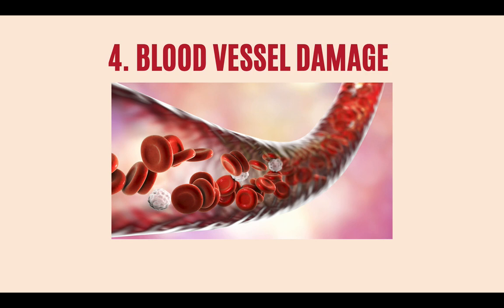Because this is happening all around the body, coagulation factors are being used up and the body's stores become completely depleted. Coagulation can't keep up with the breakage of blood vessels; small blood clots are continuously trying to form and then breaking off. You end up in a state where coagulation factors are completely depleted and can't keep up with the ruptured blood vessels. The name for this state is disseminated intravascular coagulation — DIC.